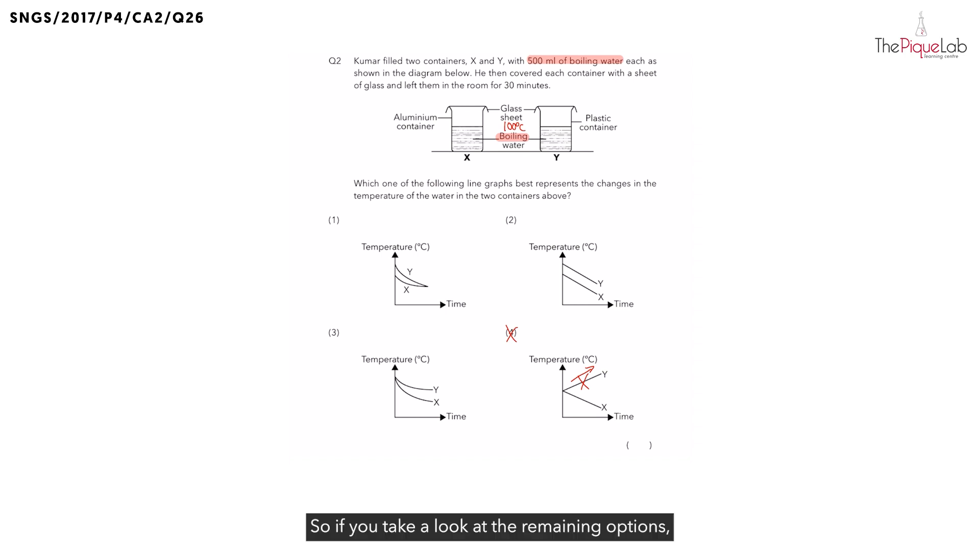So if we take a look at the remaining options, which options do not show us that the temperature of the water in X and Y are the same? We can see clearly it is options 1 and option 2. From options 1 and 2, you can see they do not start at the same temperature. But is that possible?